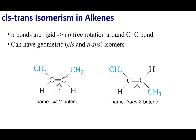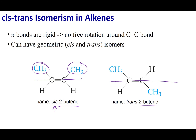Let's take a look at 2-butene and the two ways it can be arranged in space. If I were to draw a line through my double bond, what you'll see in the molecule on the left-hand side is that the CH3 groups appear on the same side. Because they appear on the same side, I can label this as cis-2-butene.